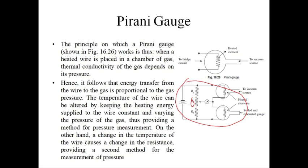Since both are exposed to the same ambient condition, the measurement gauge will respond to variations in the vacuum pressure. By adjusting the resistance R2, the bridge circuit can be balanced to give a null reading, that is a zero reading. The deflection of the bridge from the null reading due to exposure of the measurement gauge to test pressure will be independent of variations in the ambient pressure.